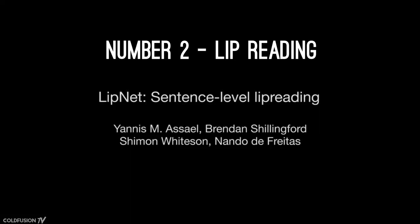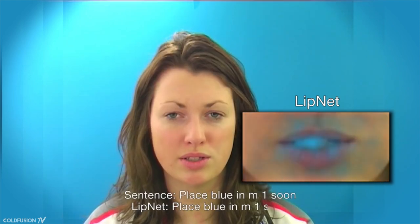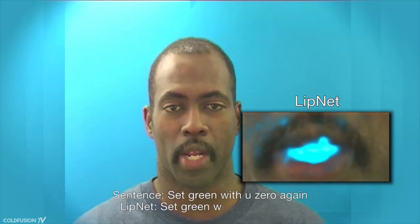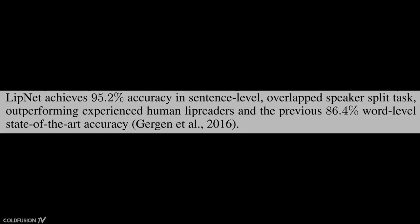Number two: lip reading. LipNet is a neural network developed by Oxford University and Google DeepMind scientists. This network can watch a silent video of a person talking and convert the mouth movements directly to text. LipNet has reached 95% accuracy in reading people's lips, compared to an average lip reader's accuracy of about 50 to 60% — so that's not bad at all for LipNet.